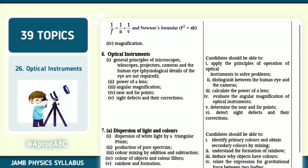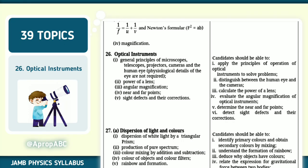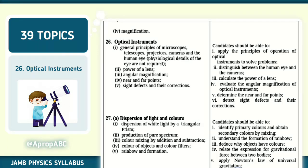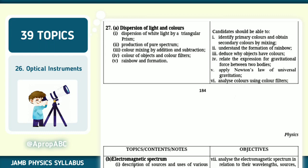Number 26 of 39, optical instruments. We're talking about the instruments that are used for the eye. General principles of microscope, telescope, projectors, cameras, human eye. Power of a lens. The angular magnification. Near point, far point. Eye defects and correction. That's long-sightedness, short-sightedness. How do you correct them? What is the other name for short-sightedness? What is the other name for long-sightedness? And all of those things like that.